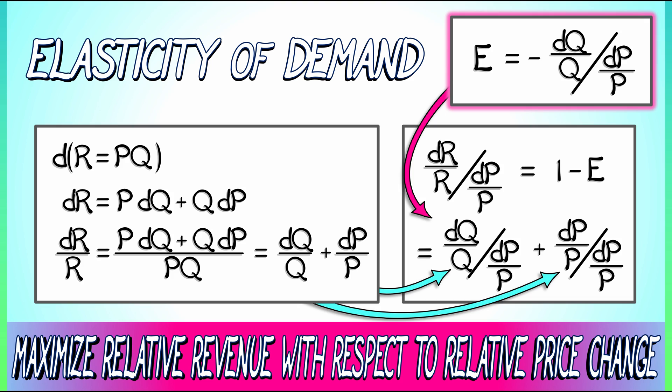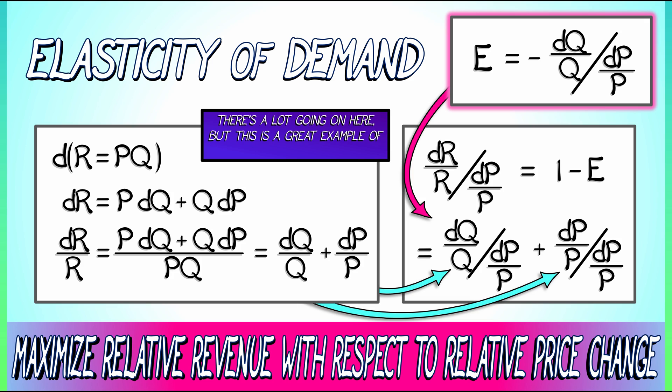We're not going to check that the second derivative is negative so that we have a maximum, but trust me on this. This is a really great example of how to manipulate derivatives, differentials, and relative rates of change in order to conclude very serious things about economics. If you get good at differentials and relative rates of change, you're going to find this is useful not just in mathematics class, but all over the place.